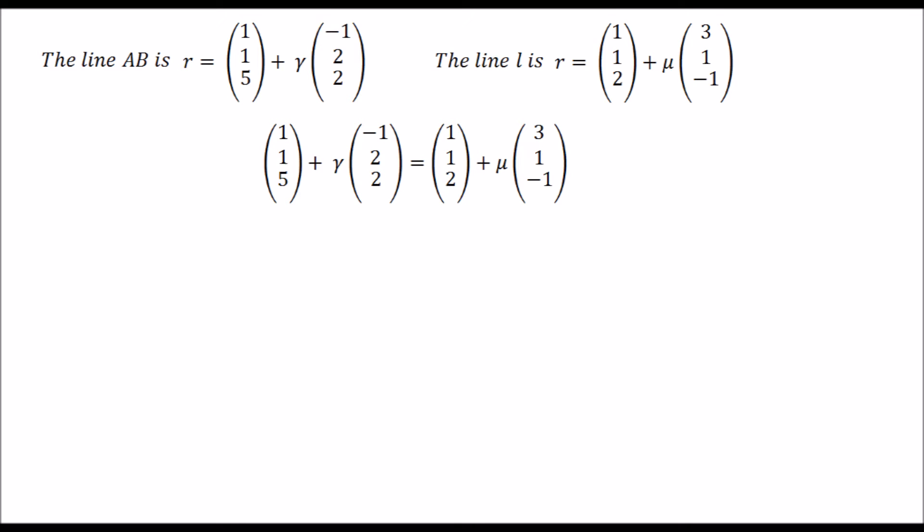Let's start off with the line AB. The points on line AB satisfy the equation of line AB. And similarly, the points on the line L satisfy the equation of the line L. So if the lines intersect, there will be a common point that will satisfy both the equations. So to check whether there is a common point or not, we have equated these two equations.